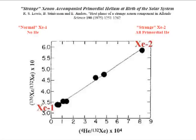Normal xenon, XE-1, came from the deep interior of a star that gave birth to the solar system. Fusion had consumed all light elements like helium from the interior region.